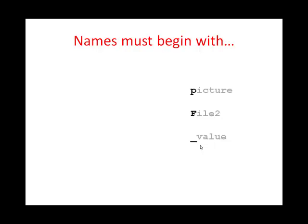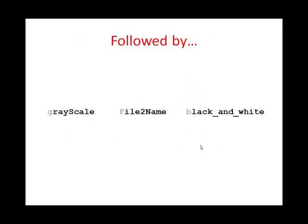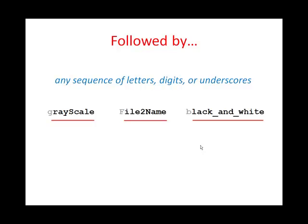The first thing is that names have to begin either with a letter — that can be an upper or a lowercase letter. They're also allowed to begin with an underscore, although I don't recommend using an underscore, and I'll explain that a little bit more in a few slides. That initial letter or underscore can be followed by any sequence of letters, digits, or underscores afterwards. And these are just some examples.